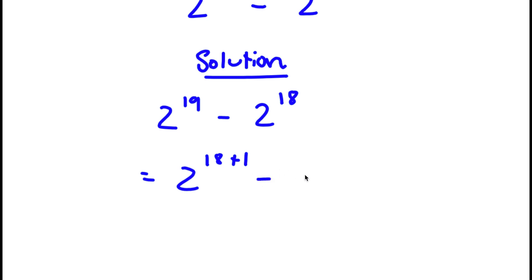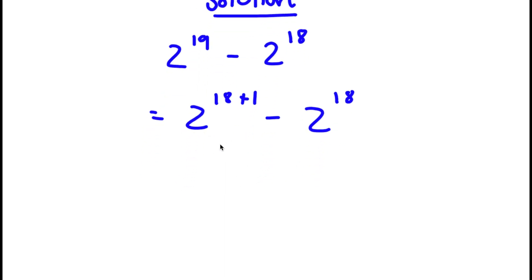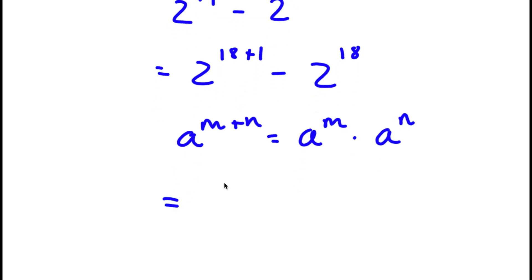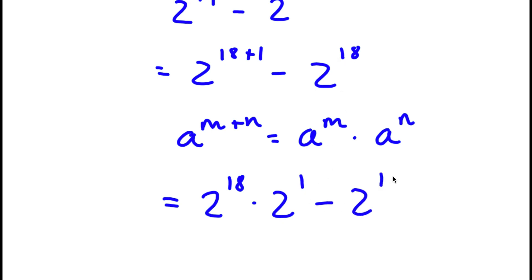So now I have 2 to the power of 18 plus 1, minus 2 to the power of 18. Now, if I have something in the form a to the power of m plus n, this is equal to a to the power of m times a to the power of n. So 2 to the power of 18 plus 1 is going to equal 2 to the power of 18 times 2 to the power of 1, and I have minus 2 to the power of 18 at the end.